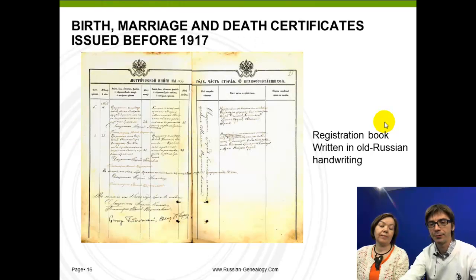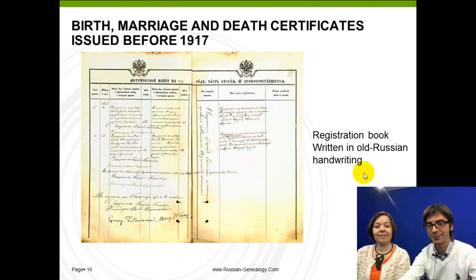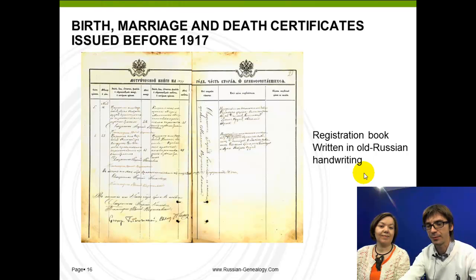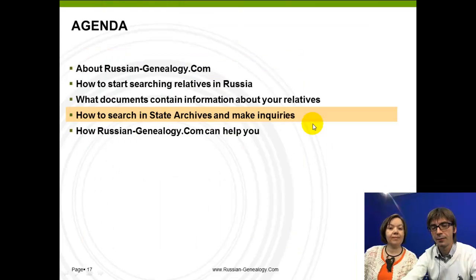Here is an example of a registration book. The challenge is not only in handwriting but specifically in old Russian handwriting, which is sometimes difficult even for local people to read. You'll most likely need an expert's help to interpret it. However, these documents contain very valuable information about who the person was, what their family was, and from which region they came.